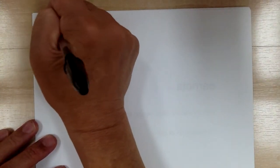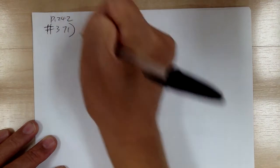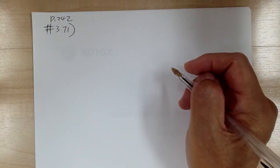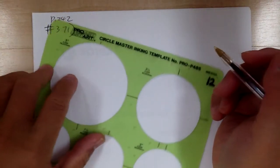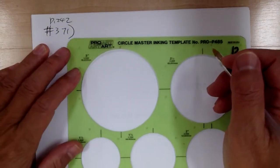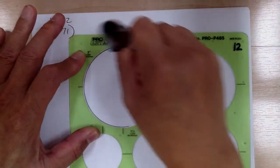Okay, let's go to 371. So you have a triangle inscribed in a circle.